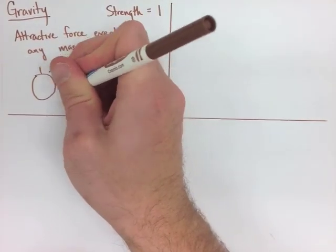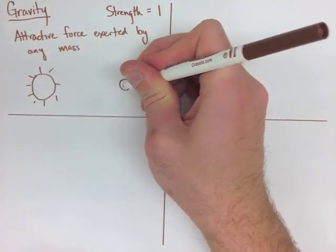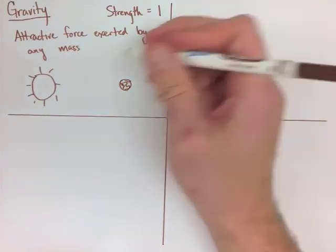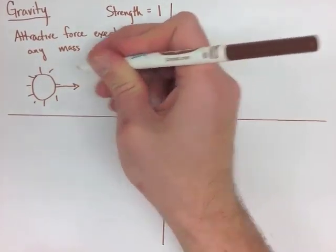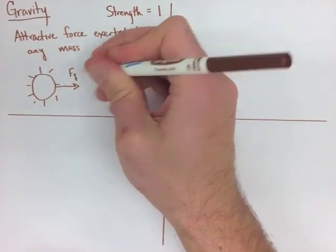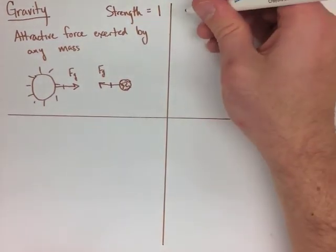And it is the attractive force that is exerted by any mass. In our diagram here, we have the sun and the earth. And they both experience force of gravity from each other. And it's the same in each direction.